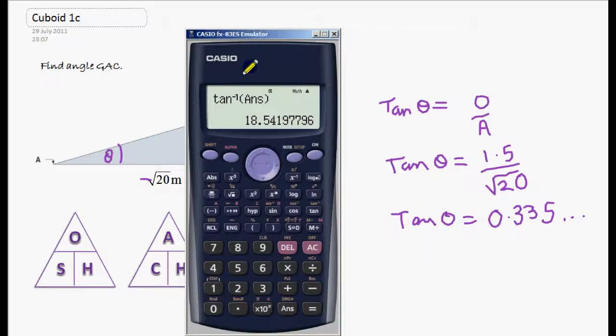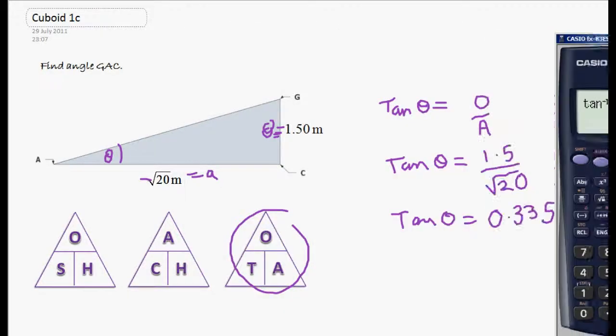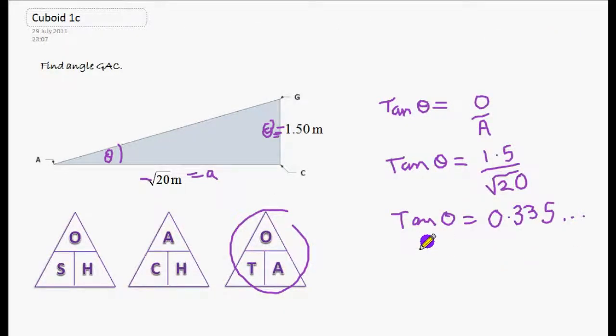Now, again, we're going to round to 3 significant figures. So let's look at 1, 2, 3 significant figures. Look at the fourth one: it's a 4, so it's less than 5, so we don't round up. The answer will be 18.5 degrees to three significant figures. Theta equals 18.5 degrees. And probably we ought to write our answer out properly: angle GAC equals 18.5 degrees to 3SF.